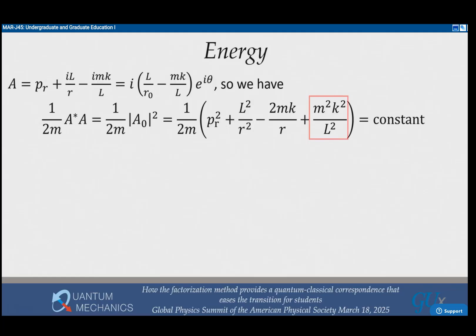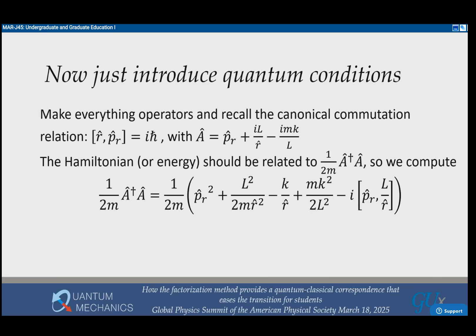You get the energy the same way we did before by looking at A star A divided by 2m. In this case it'll give you the energy plus an extra constant, but the whole thing is a constant, so you subtract the constant and get the result for conservation of energy. How does this go to hydrogen? With hydrogen you have your canonical commutation relation between the radial coordinate and radial momentum equal to ih bar. You just form one over 2m a dagger a. You have to calculate this commutator, it's not that difficult.